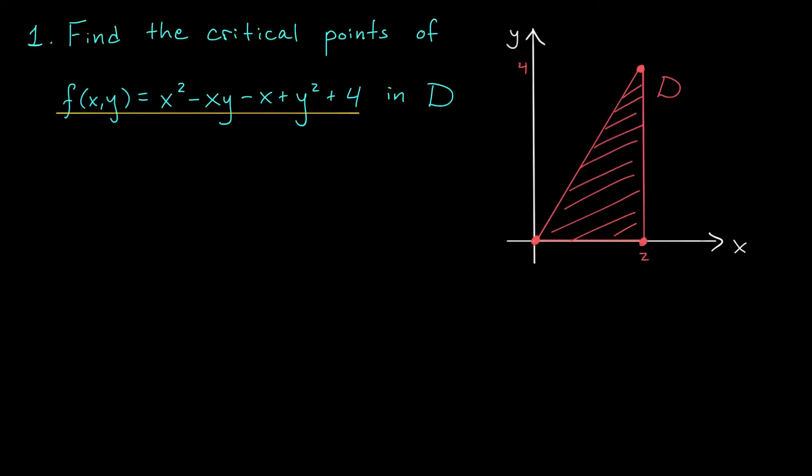To find our critical points, we look at the partial derivatives fx and fy. The partial with respect to x is given by 2x minus y minus 1. And the partial with respect to y is given by minus x plus 2y.